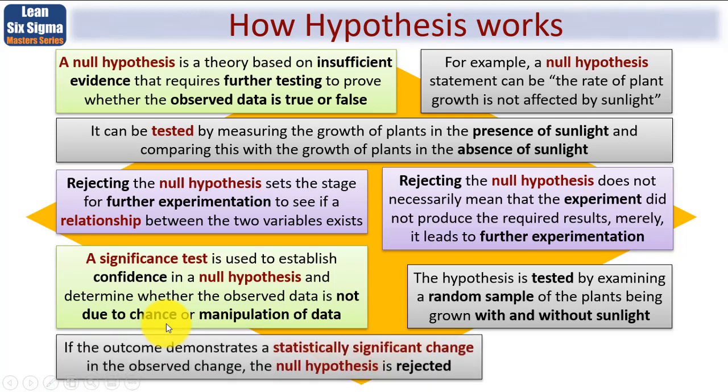So if the outcome demonstrates a statistically significant change in the observed change, in this case of plants, then the null hypothesis is rejected. Here's the null hypothesis, we are proposing that the rate of plant growth is not affected by sunlight. But if having done the measurement, and you find that it's statistically significant, you'll need to know what that means, and I'll be explaining that shortly, then the null hypothesis is rejected, it's not true. In other words, we're saying that's wrong, we've just found out that plant growth can be affected by sunlight.